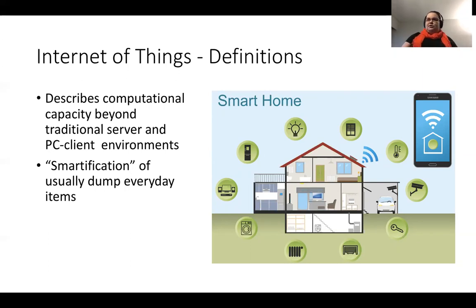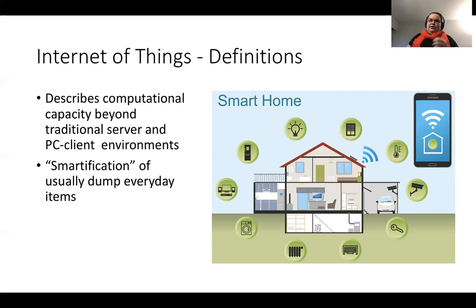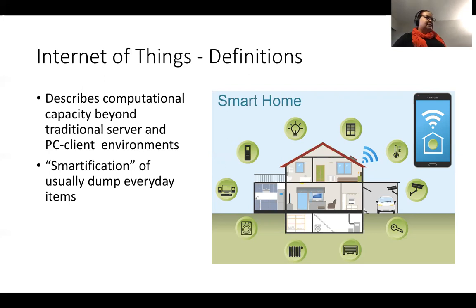We can measure what sort of potential air quality issues there are in the environments we are living. In general, Internet of Things describes all sorts of potential applications that are beyond the traditional system where we have a server and a PC or web services or traditional email. The smartification terminology means bringing computational capacity and networking capabilities into everyday items — whether they are kitchenware, smart TV, PlayStation — collecting data and giving recommendations based on those data collection results.